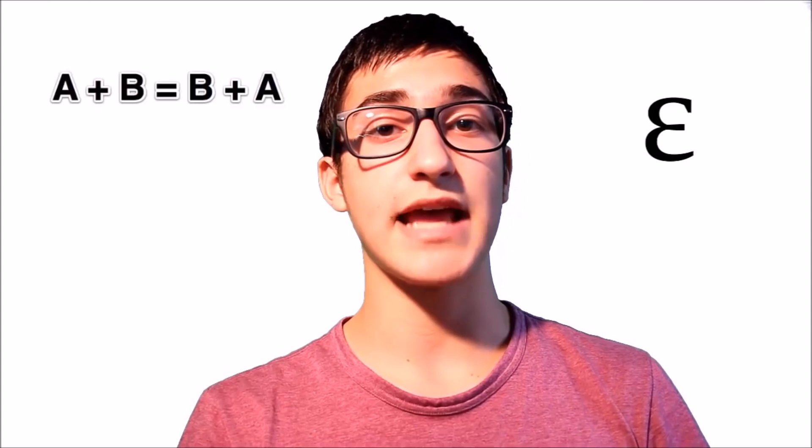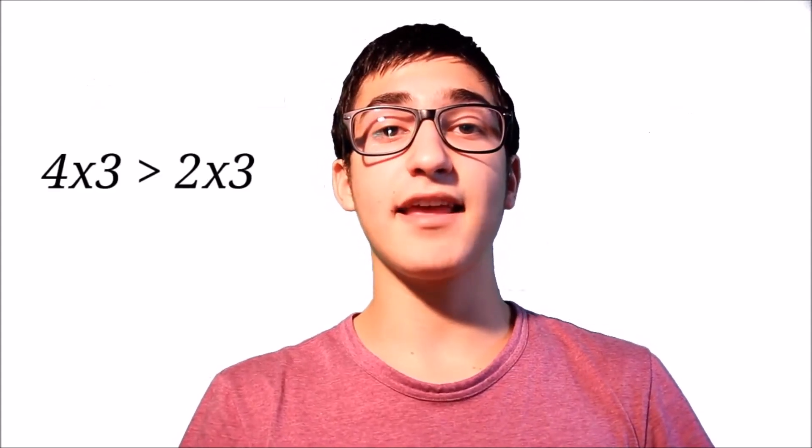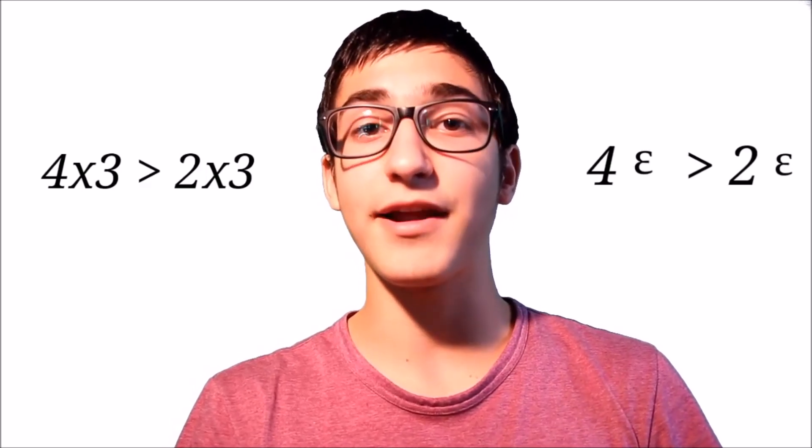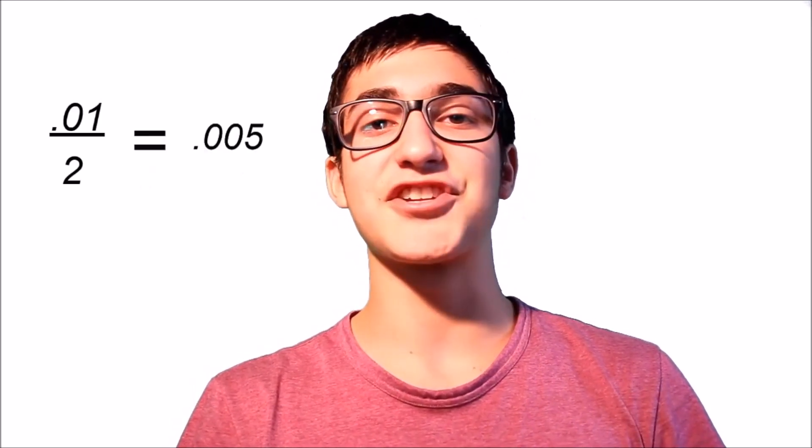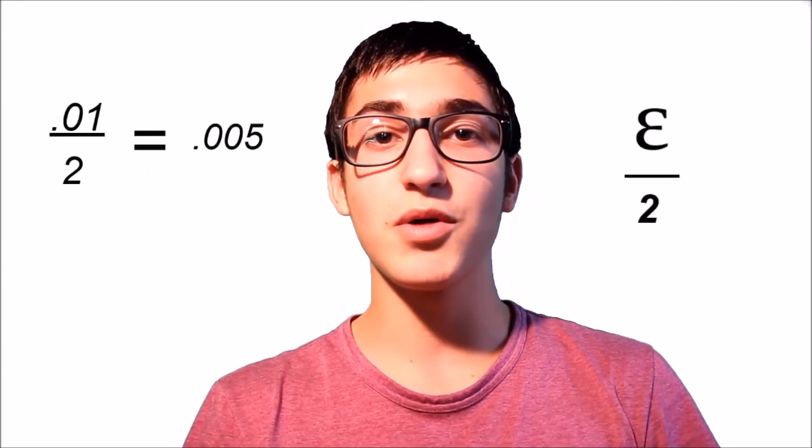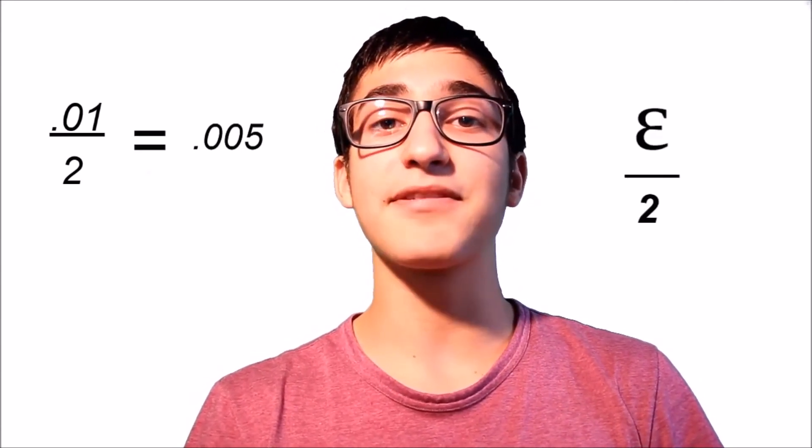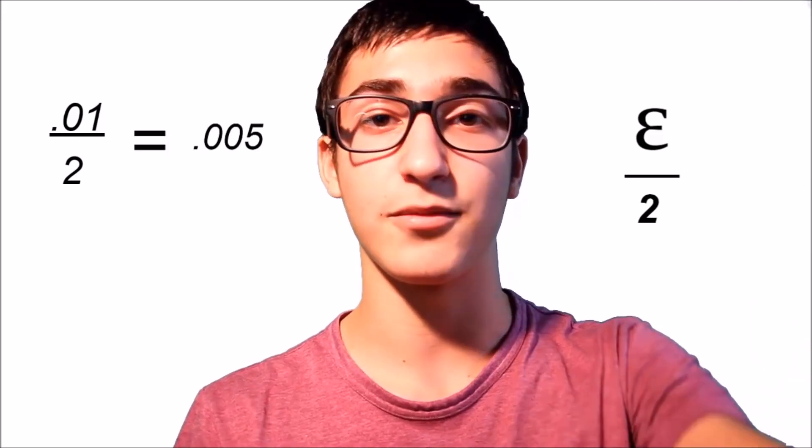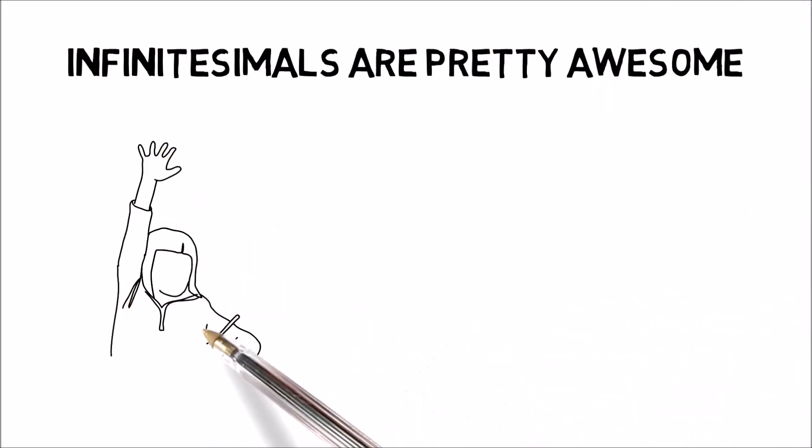And it gets even better. All the laws that govern the real number line also govern the hyperreal number line. Just like I can say a plus b equals b plus a, so too I can say this in terms of infinitesimals, which are symbolized using epsilon. And just like I can say 4 times 3 is greater than 2 times 3, so too I can say 4 times epsilon is greater than 2 times epsilon. And just like I can always divide a number by 2 to get a smaller number, so too I can divide epsilon by 2 to get a smaller infinitesimal. I can say with confidence that infinitesimals are awesome.